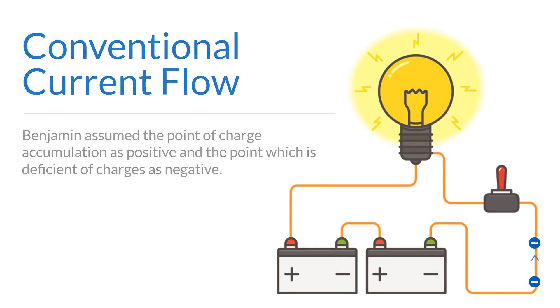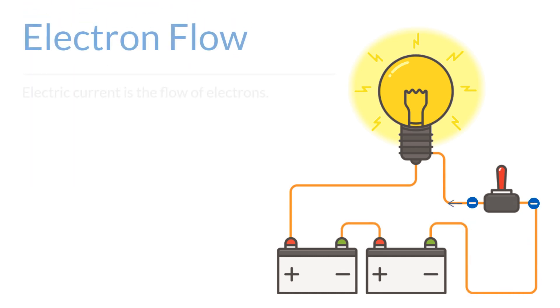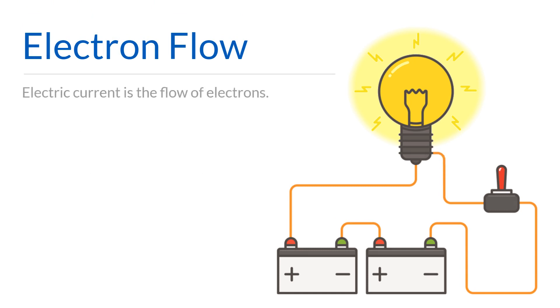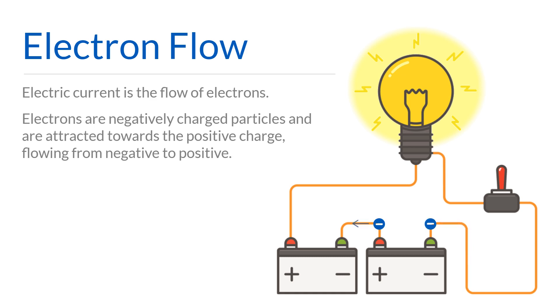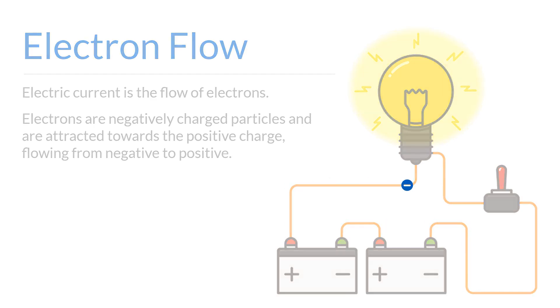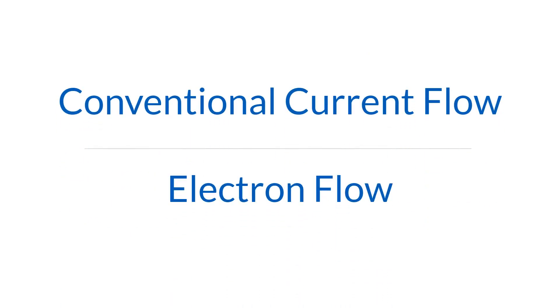But in reality, an electric current is nothing but the flow of electrons. Electrons are negatively charged particles and are attracted towards the positive charge, flowing from negative to positive. This is the actual direction of electron flow. Even though it has been determined that electron flow is the correct theory, the conventional flow theory still dominates the industry. Either theory can be used if the orientations remain consistent.